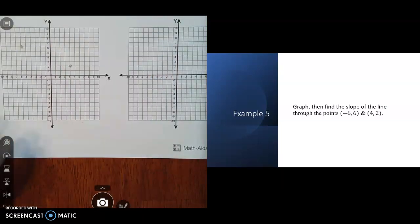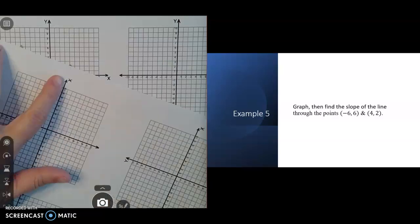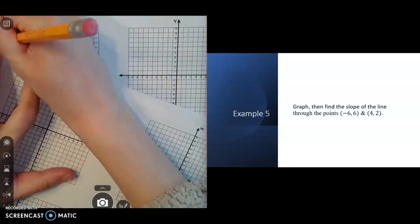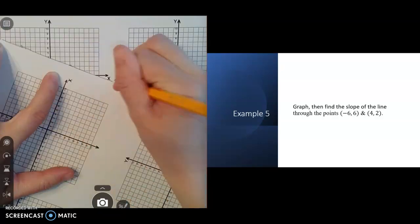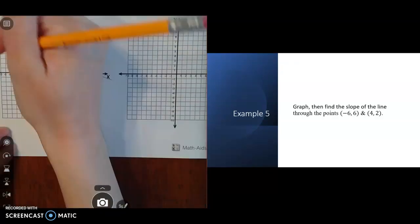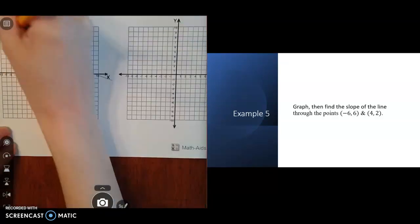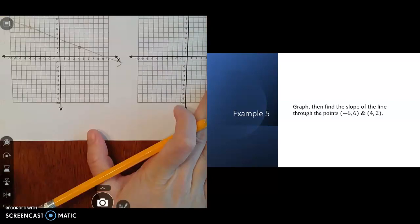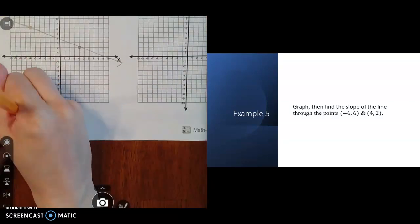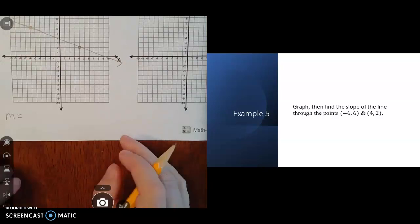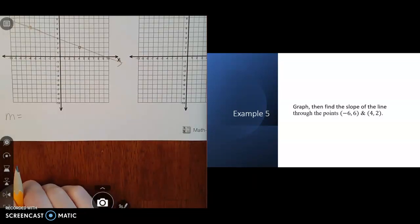I'm going to use a piece of paper for a straight edge to make a straighter line. Now to calculate the slope, we'll use m to represent slope. We're going to do the change in y over change in x.